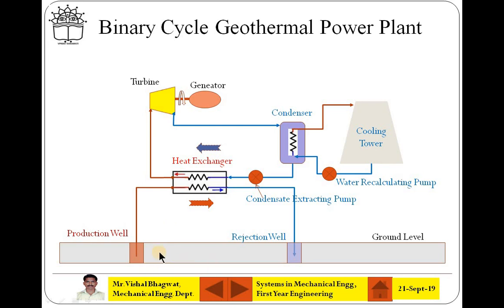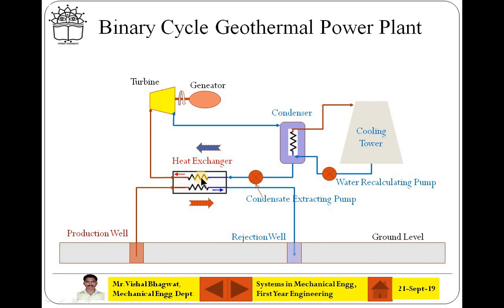In the earth crust or on the surface, some drills are made. One will be called as a production well and another drill may be called as a rejection well. From the production well, the source of heat can be obtained. As we are discussing about binary cycle, from the production well, the brine solution will be obtained which will be having very high temperature, up to 100 degree Celsius or up to 200 degree Celsius. That brine solution means salt solution is taken to a heat exchanger where it is exchanging heat to some of the organic liquids.